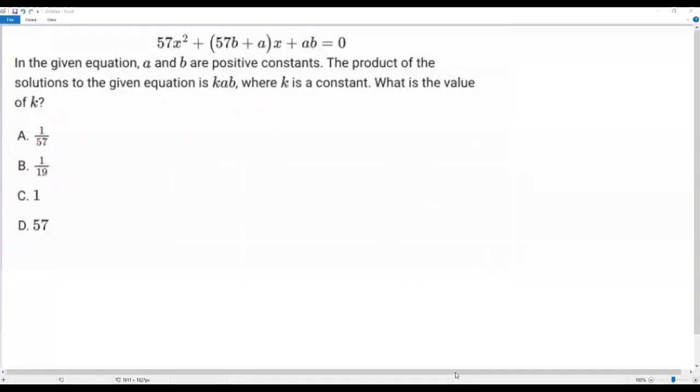Here we have a SAT math question. Let's go through the information. There is a quadratic equation given: 57 times x squared plus 57b plus a times x plus ab equals zero.